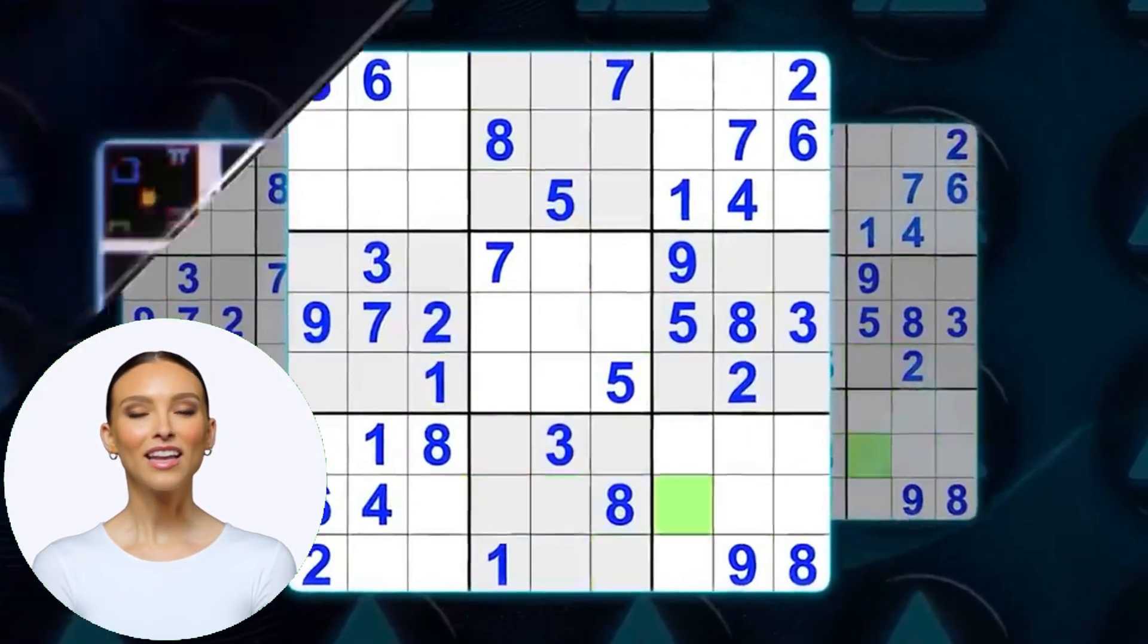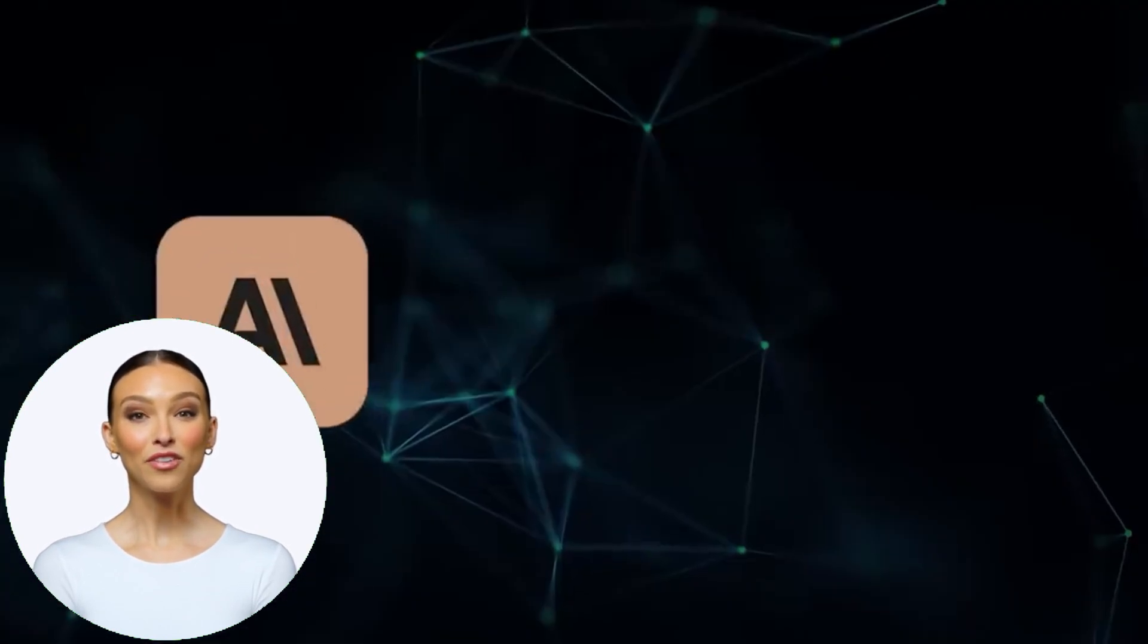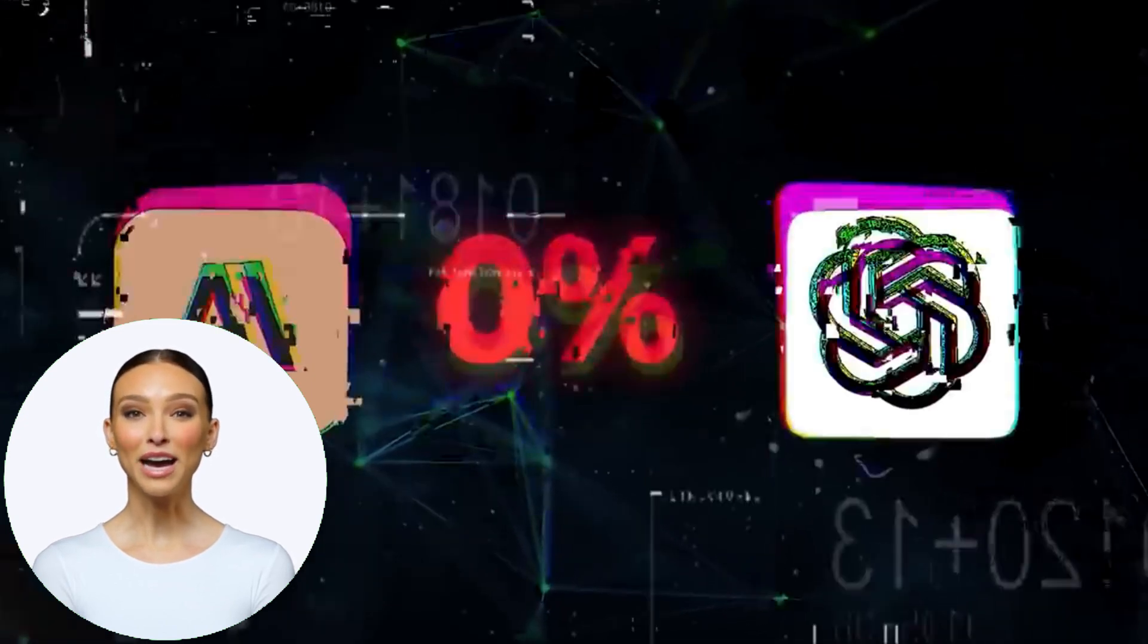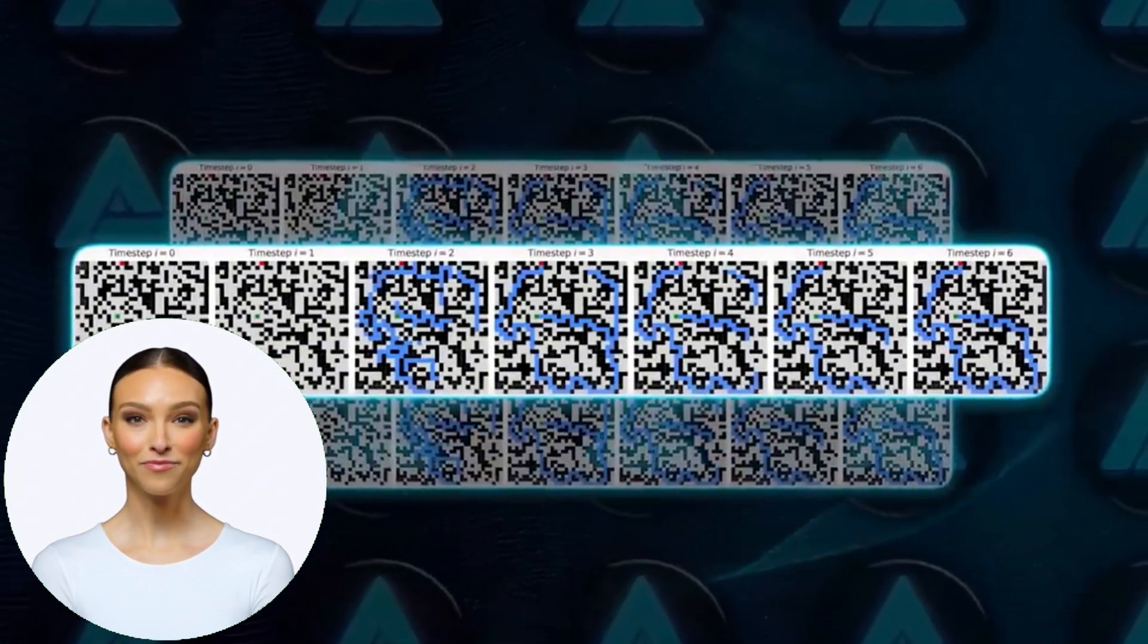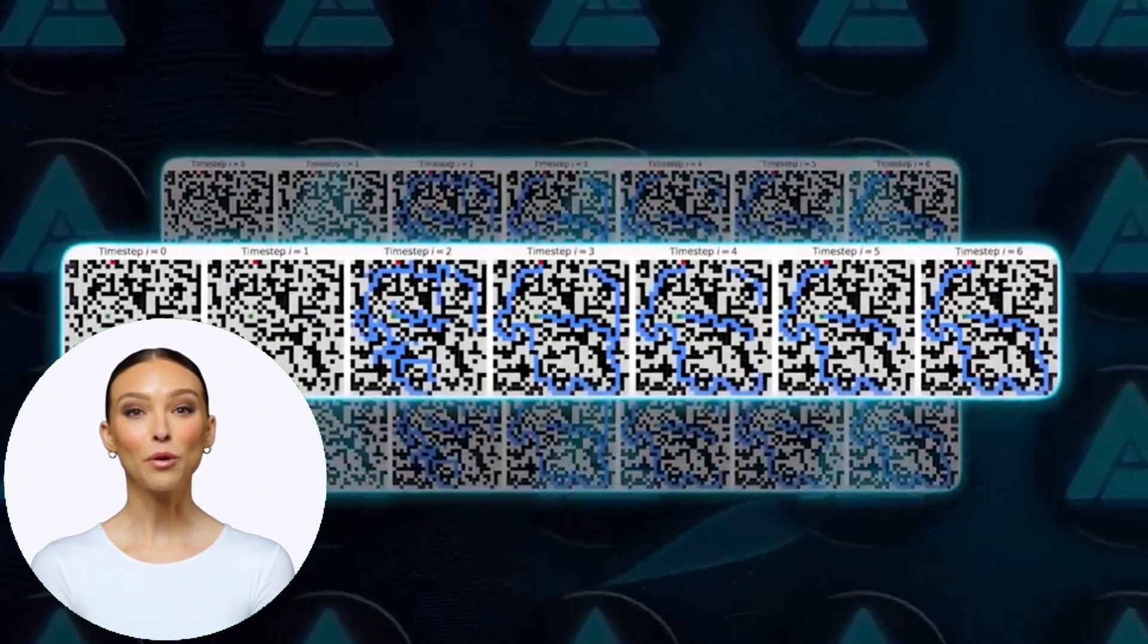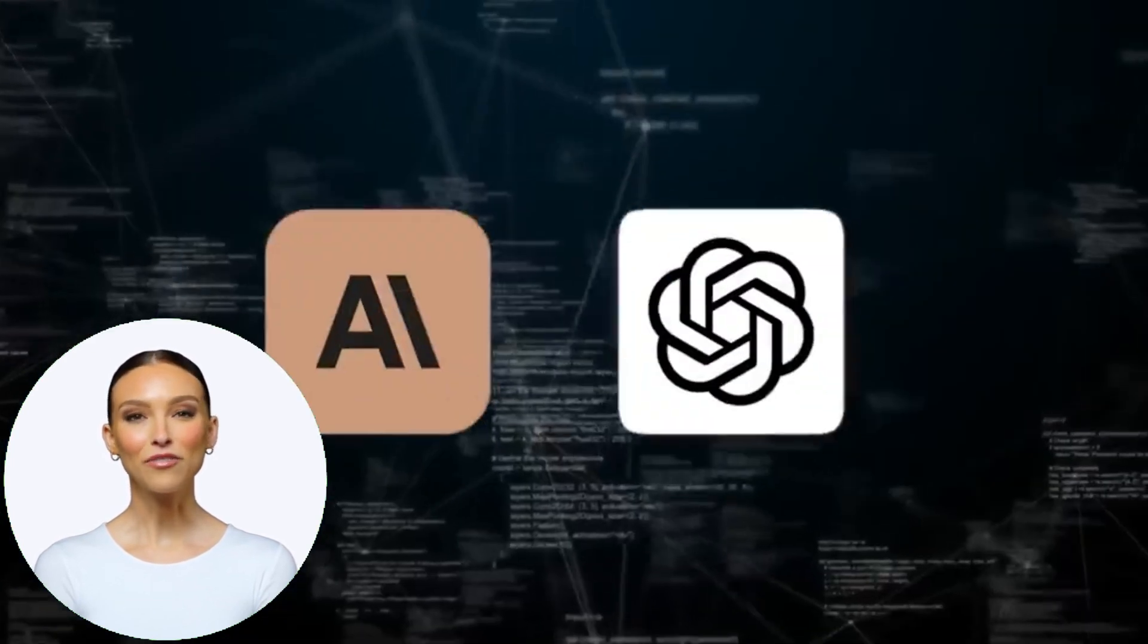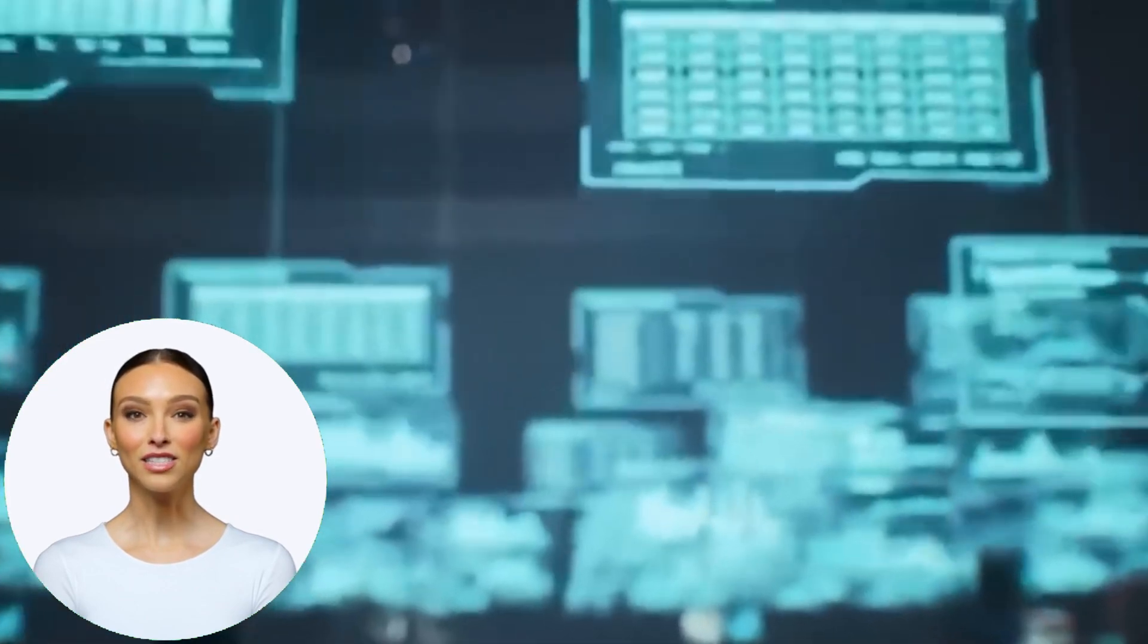And there's more, Rodrigo. In the Sudoku test, at difficult and extreme levels, the HRM solved 55% of the puzzles. Do you know how many Claude or OpenAI's models solved? Zero percent. Not a single one. And in the maze challenge, with 30 by 30 grids, the HRM found the optimal path in 74.5% of the tests. The others, again, zero.